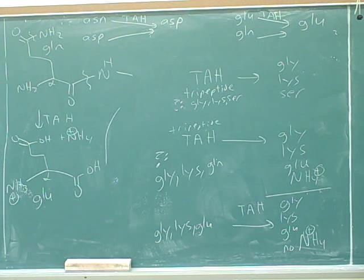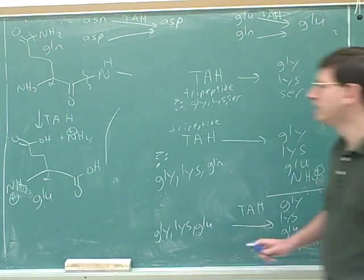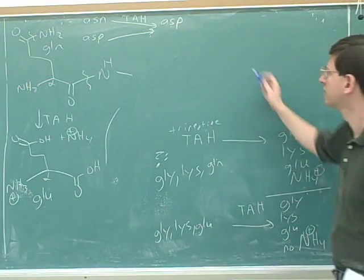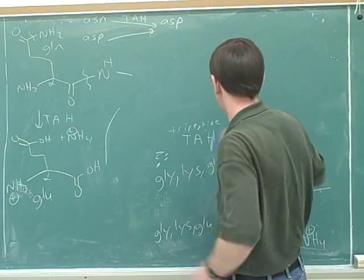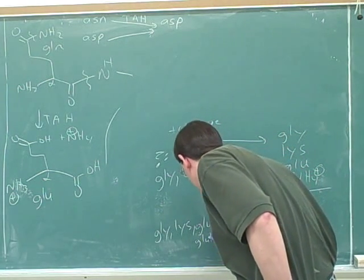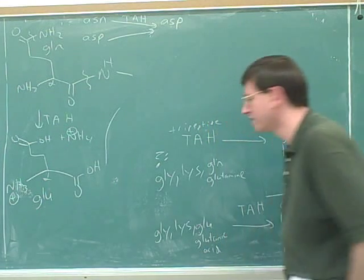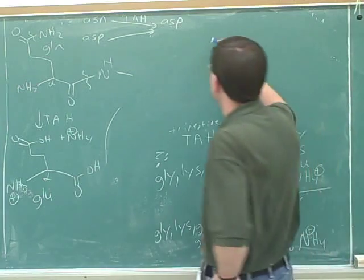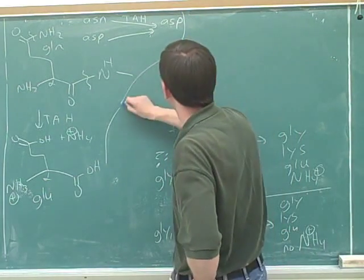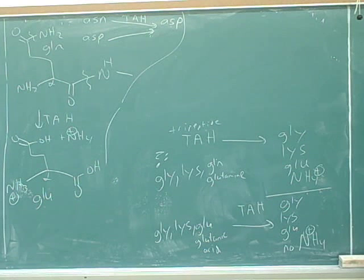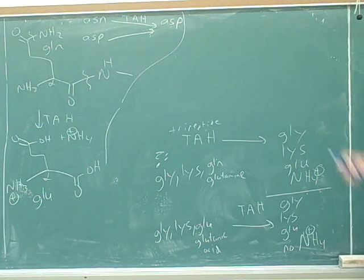Is there a marker for ASN or ASP? The key insight is: you will never get glutamine after total acid hydrolysis. Total acid hydrolysis can never give you glutamine as a product, because the hydrolysis breaks the side chain bond and converts glutamine into glutamic acid.